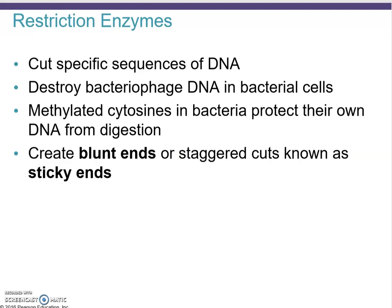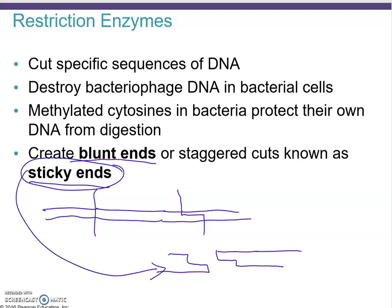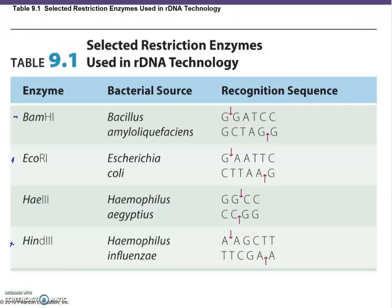Bacteria methylate their own DNA to protect it from digestion by their own restriction enzymes. Restriction enzymes create either blunt-end or sticky-end cuts. A blunt-end cut goes straight through the double strand. A sticky-end cut involves cutting one strand at one position, then cutting the complementary strand offset, so the resulting pieces have single-stranded overhangs — the sticky ends.